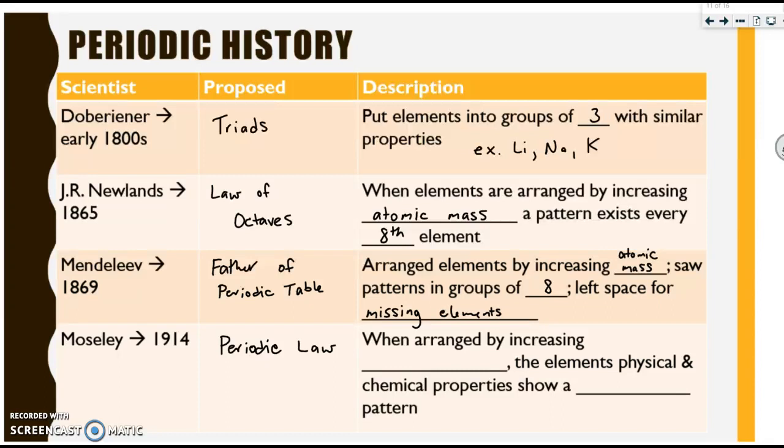Years have gone by, and Moseley, in 1914, rearranged the elements just a little bit. He proposed the idea of periodic law. And instead of increasing atomic mass, he said the elements should be arranged by increasing atomic number. And when they are arranged by increasing atomic number, the elements' physical and chemical properties show what is known as a periodic pattern, which we are going to be discussing shortly. So these are some of the key people that played a major role in the development of the periodic table. They make great multiple choice questions for tests.